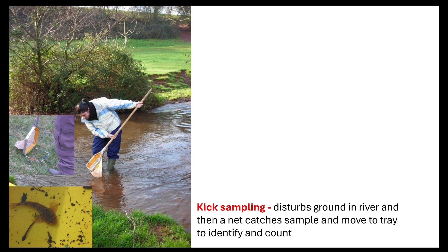There are different ways in which we can sample animals. If we want to look at animals that can move around more quickly then we have to do a sampling technique relevant to them. If I'm looking at organisms that are found in rivers, I'd want to do something called kick sampling where I'm disturbing the ground in the river and then I have a net that's going to catch that sample and I would then move that to a tray to identify and count. You can put a quadrat down into the area that you are wanting to sample so that way you are controlling the size of the area that you are sampling.